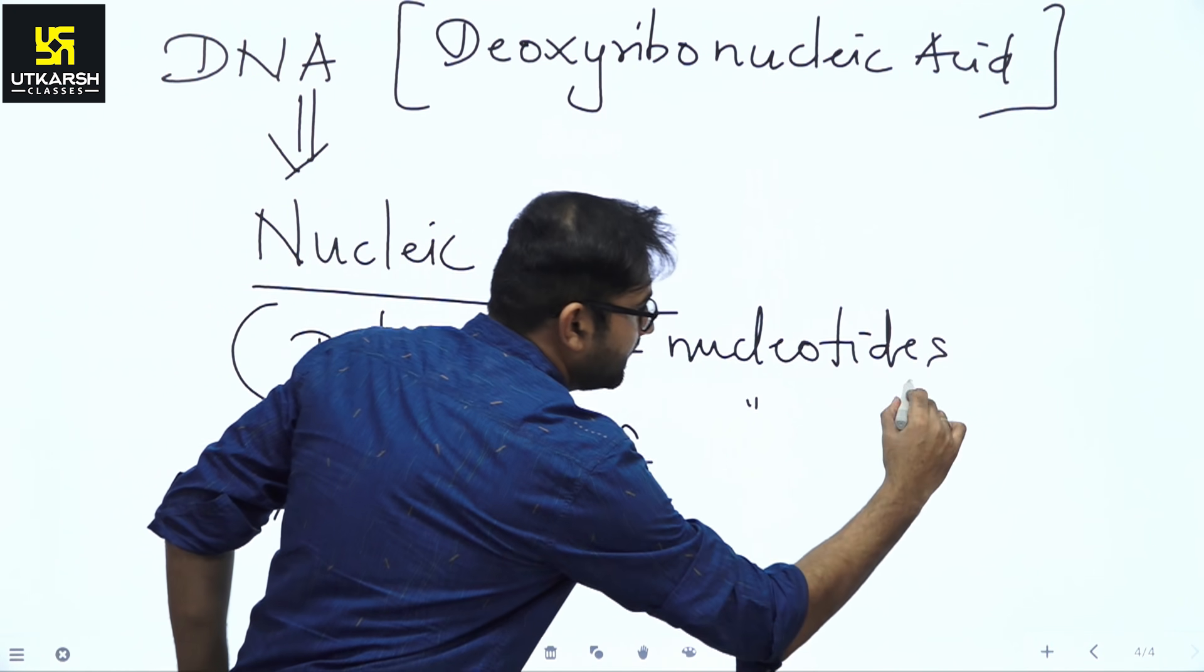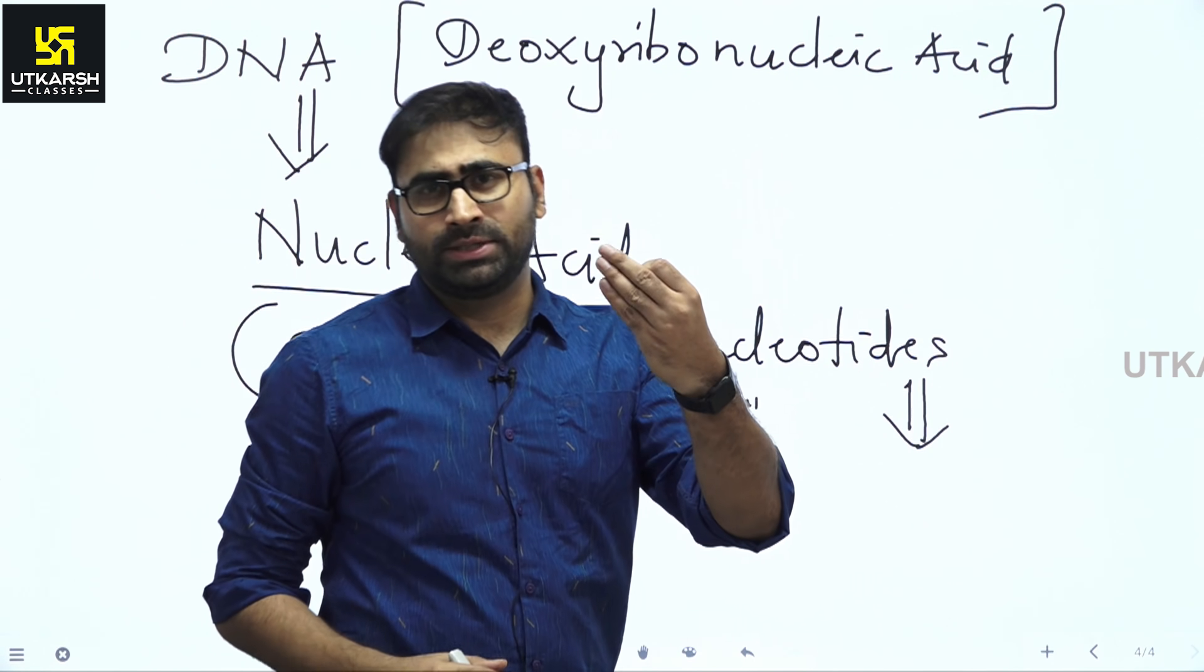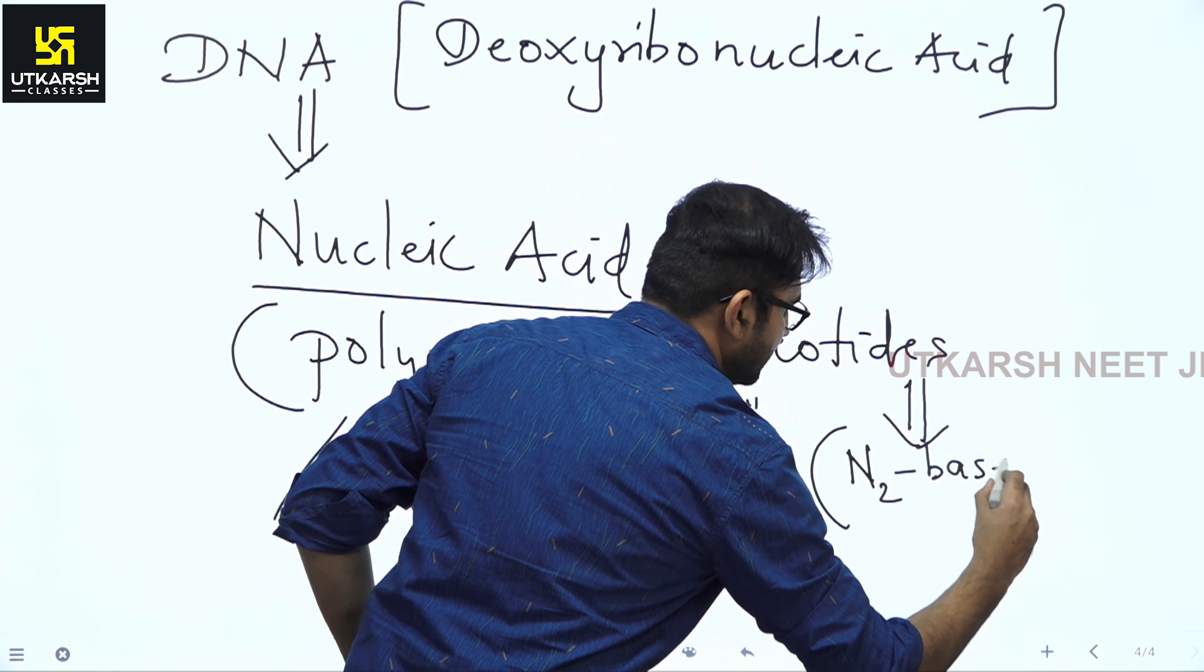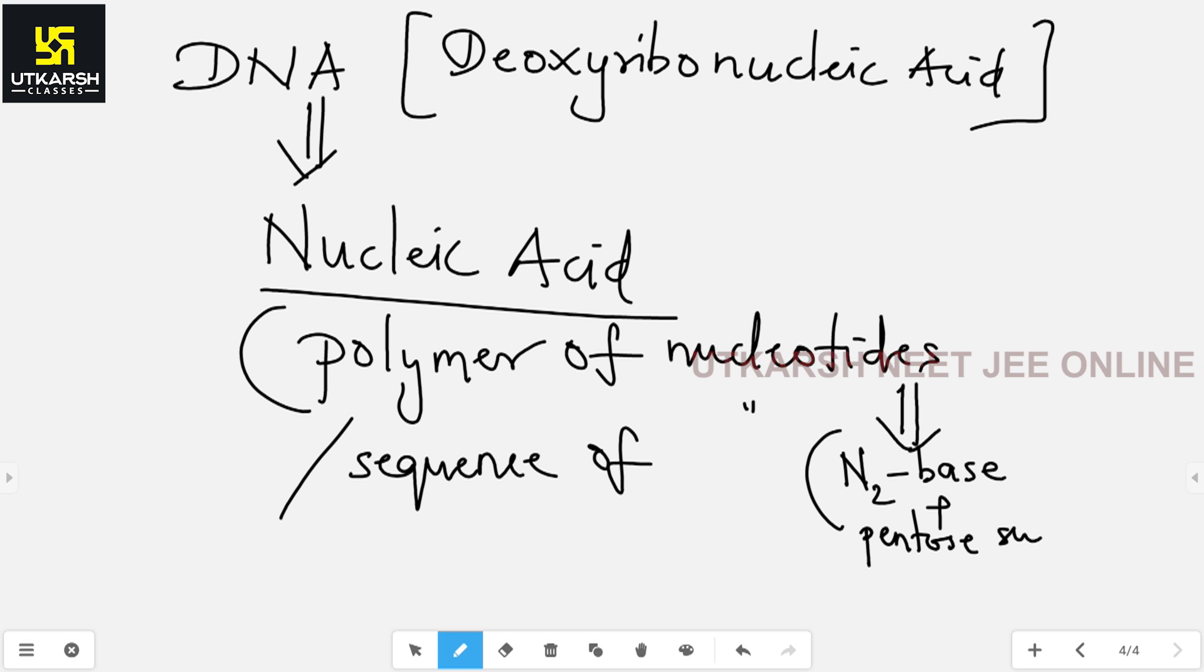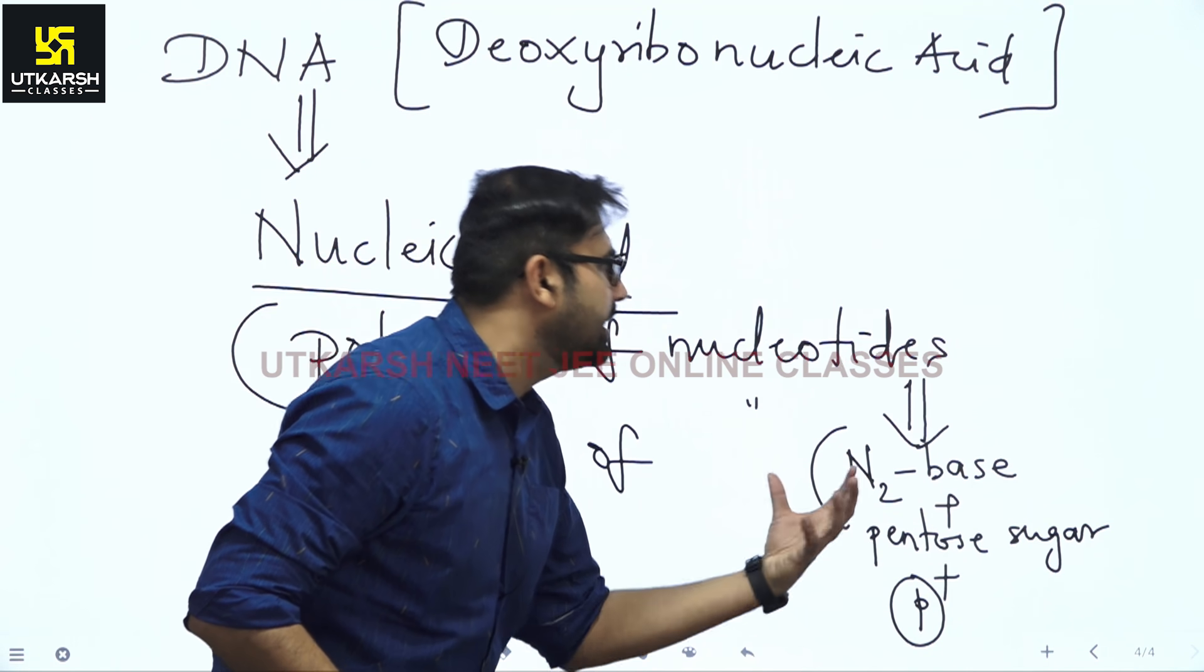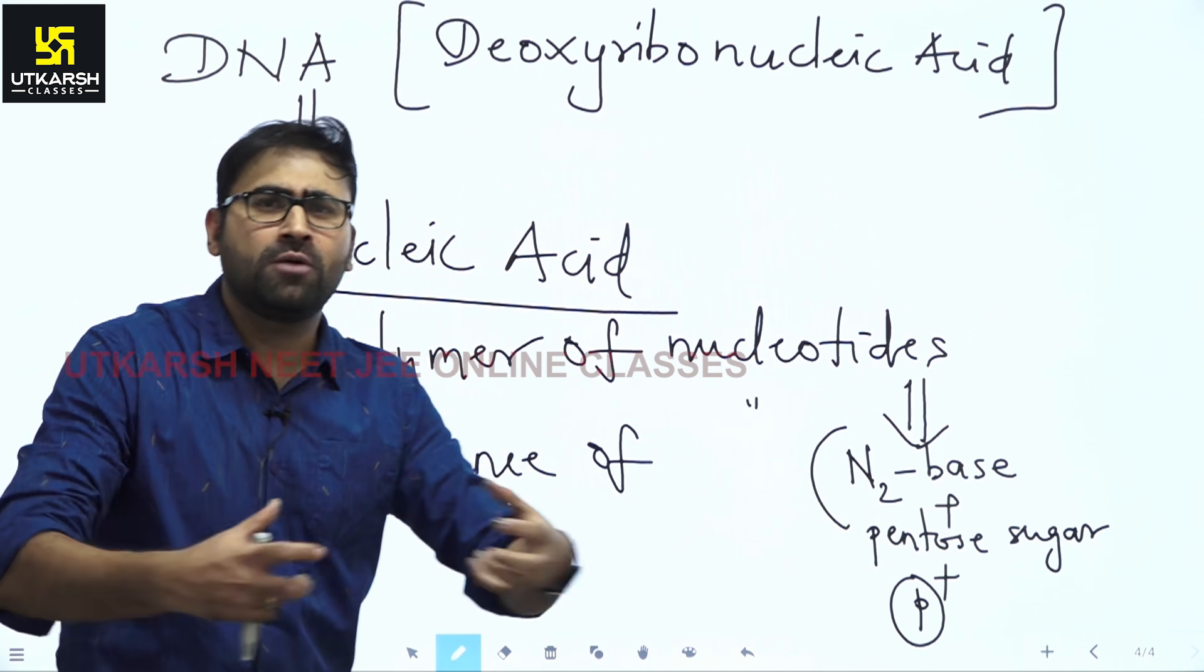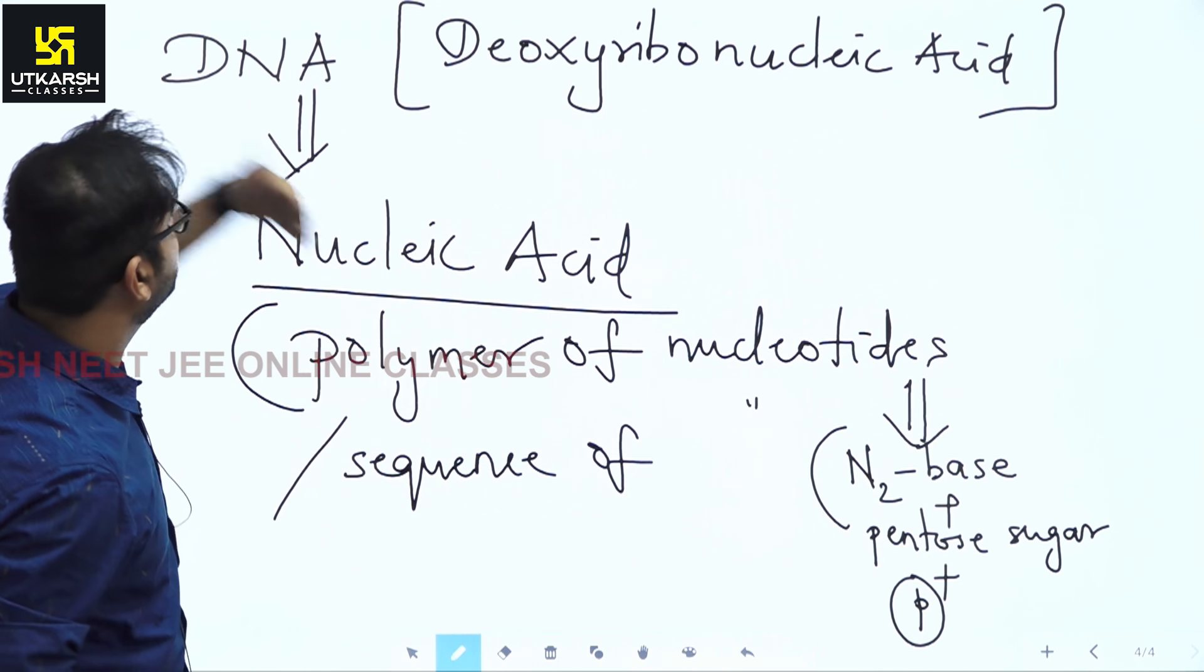Now my dear students, what is a nucleotide? Three compounds make up a nucleotide. A nitrogen base, a pentose 5-carbon sugar, and a phosphate group. These three compounds make up a nucleotide. And many nucleotides combine to form a chain called a nucleic acid. And that in turn, my students, is a DNA.